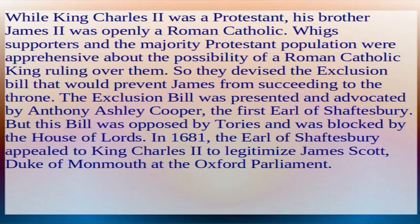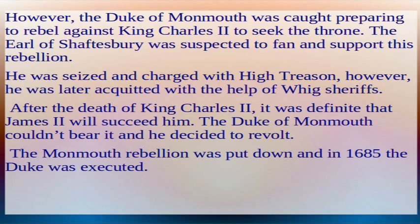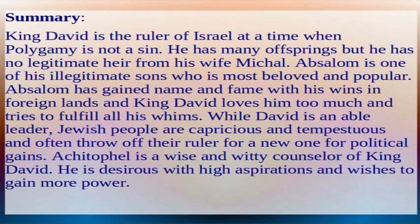In 1681, the Earl of Shaftesbury appealed to King Charles II to legitimize James Scott, Duke of Monmouth, at the Oxford Parliament. However, the Duke of Monmouth was caught preparing to rebel against King Charles II to seek the throne. The Earl of Shaftesbury was suspected of fanning and supporting this rebellion; he was seized and charged with high treason but was later acquitted with the help of Whig sheriffs. After the death of King Charles II, it was definite that James II would succeed him. The Duke of Monmouth couldn't bear it and decided to revolt. The Monmouth rebellion was put down, and in 1685 the Duke was executed.